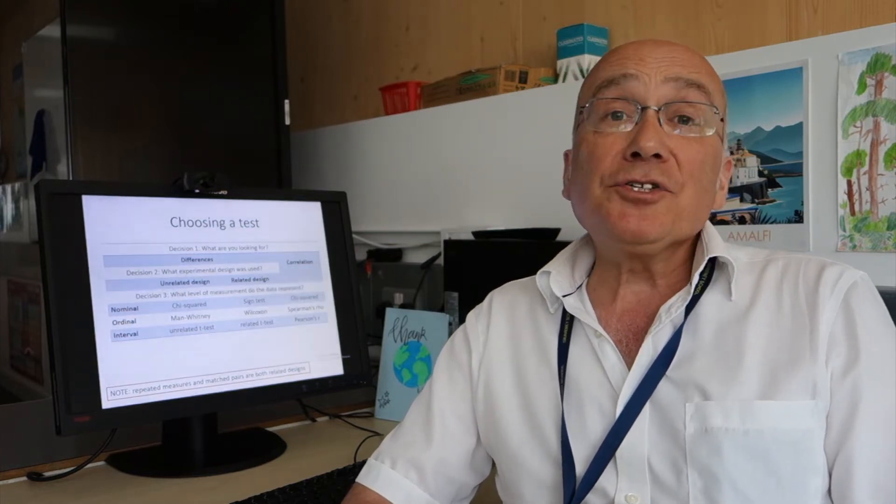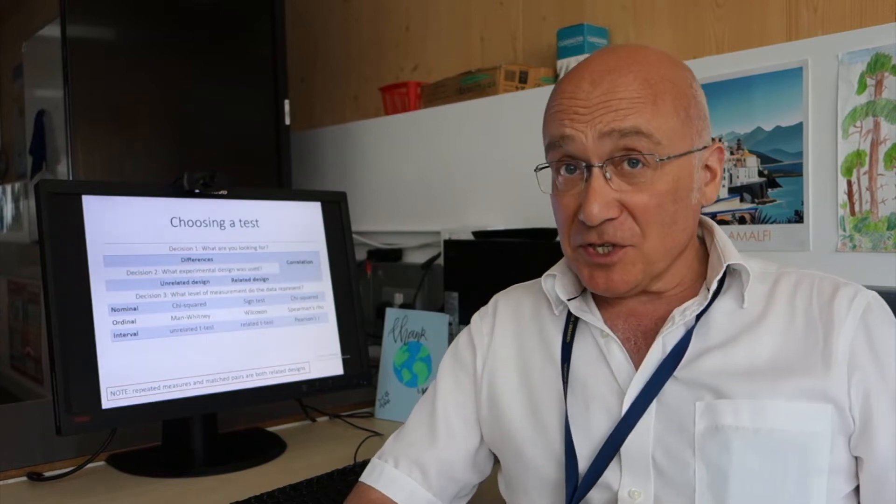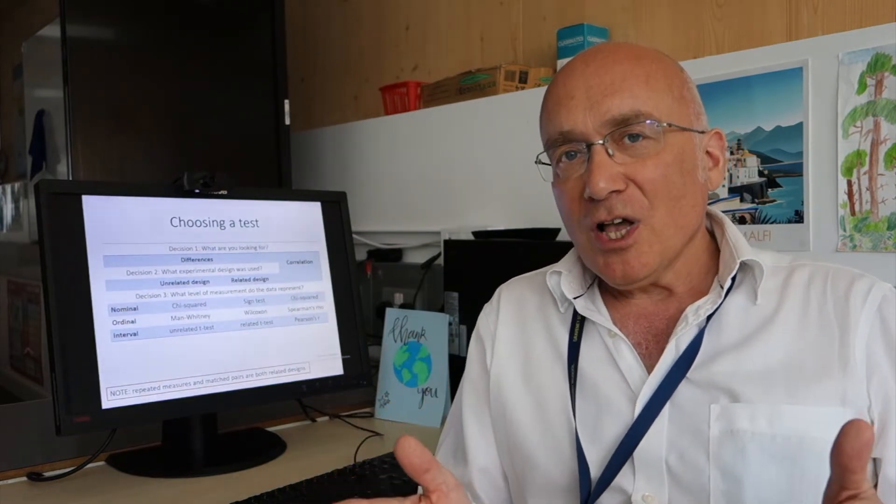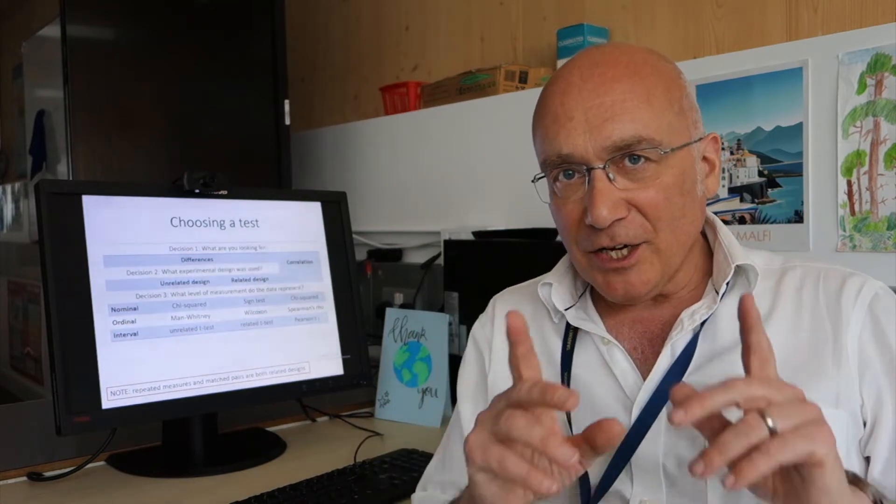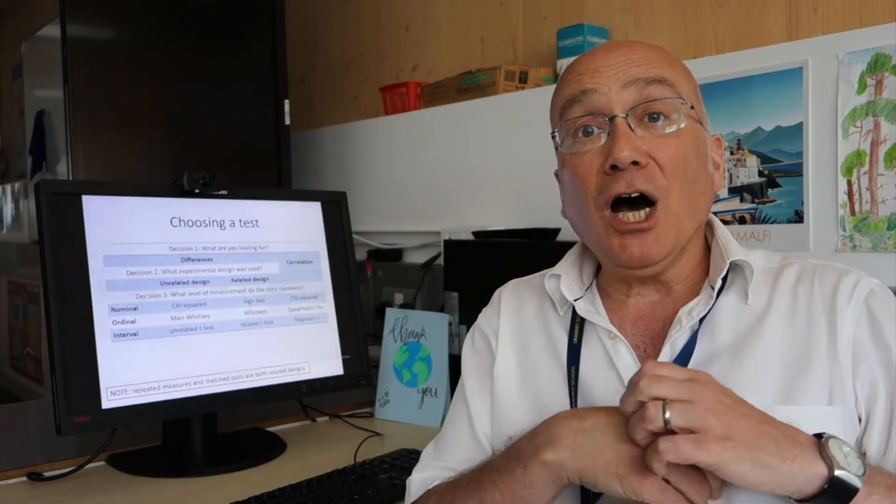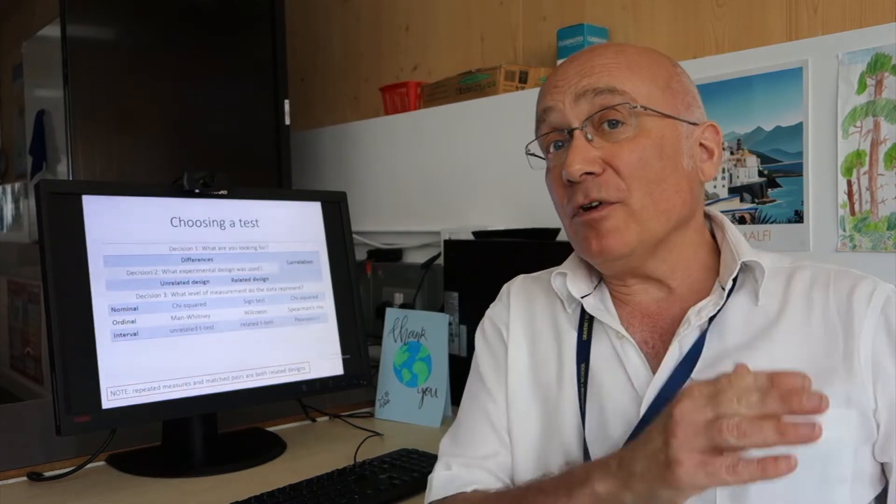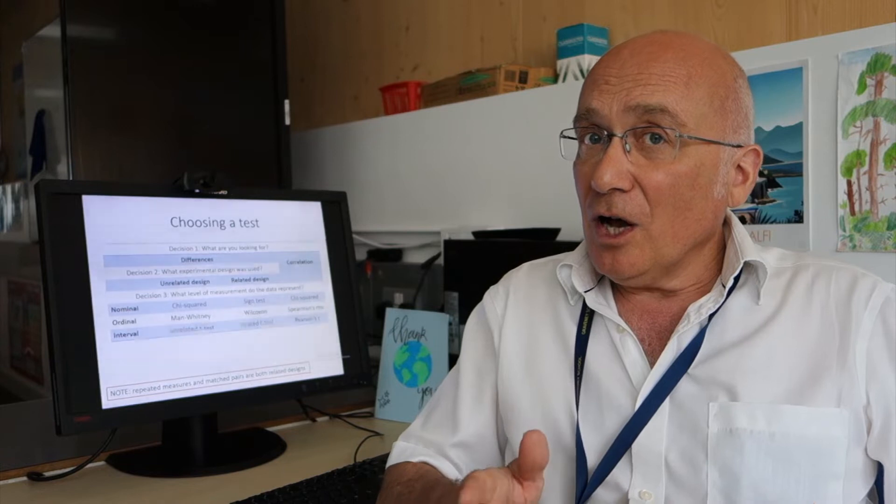Now, in order to be able to choose a statistical test, first of all you're going to need to know about the different experimental designs. That is to say, repeated measures, correlation, independent groups, that lot. And you're going to find that on page 184 of the Catbook. So if you need a bit of a reminder, perhaps go and have a look at that page in the Catbook before we dive into this video.